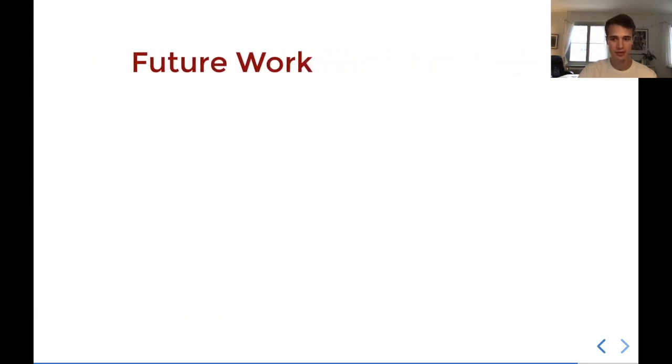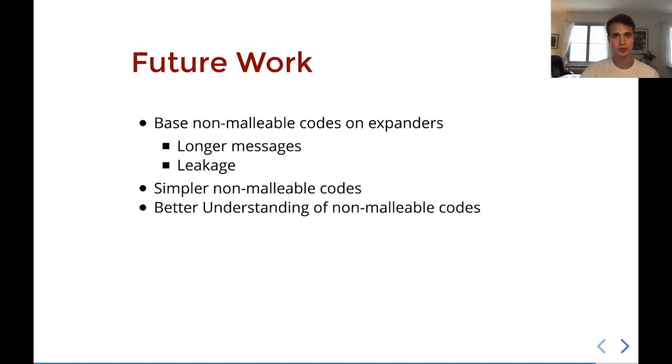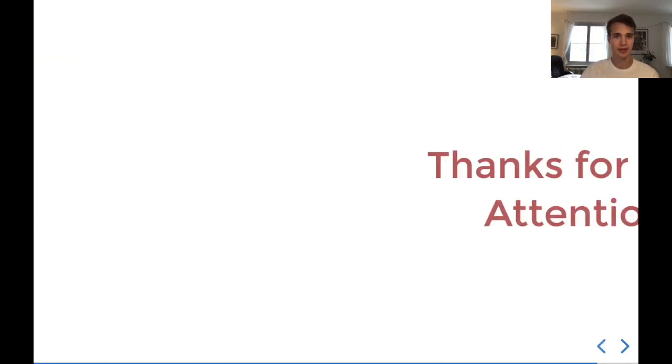Having proven the main theorem, let's discuss some future work that we could possibly do. The idea would essentially be that we would try to base non-malleable codes on expanders and see where that led us. For that, we could look into encoding longer messages, introduce leakage. Like, what is the reason for this? The reason would be that we could get very simple non-malleable codes in terms of both construction, but also in terms of proof, hopefully. And that this would then ultimately lead to a better understanding of non-malleable codes would be the hope. Thanks a lot for watching.